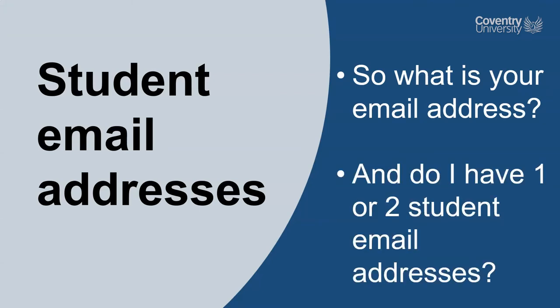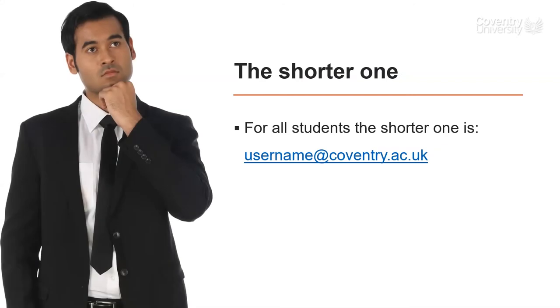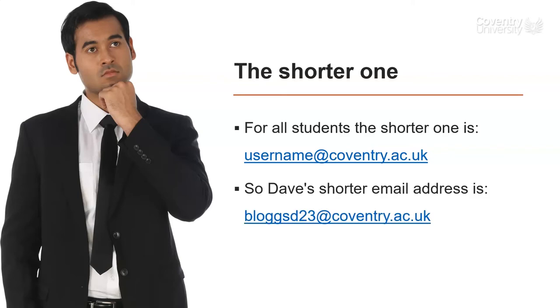You actually get two versions of the same email address: a shorter one and a longer one. Some apps need the shorter one to log in and some need the longer one. The shorter one for all students is in this format: it's username at coventry.ac.uk. So for Dave, this will be BloggsD23 at coventry.ac.uk.